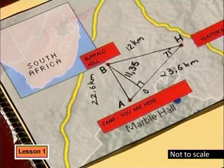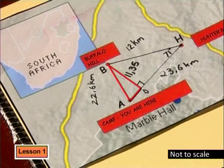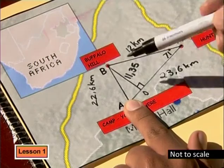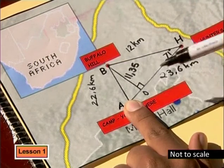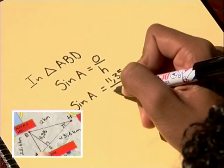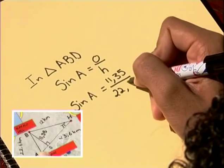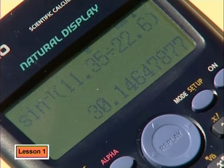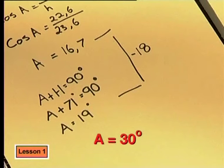Now in triangle ABD, BD is 11.35 and AB is 22.6. We want angle A, so AB is the hypotenuse and BD is the opposite side. Sine A equals opposite divided by hypotenuse, that's 11.35 divided by 22.6. Taking the inverse sine gives angle A equal to 30.1 degrees — approximately 30 degrees. That's totally different from our earlier estimate of 18 degrees; we would have gone in the wrong direction!